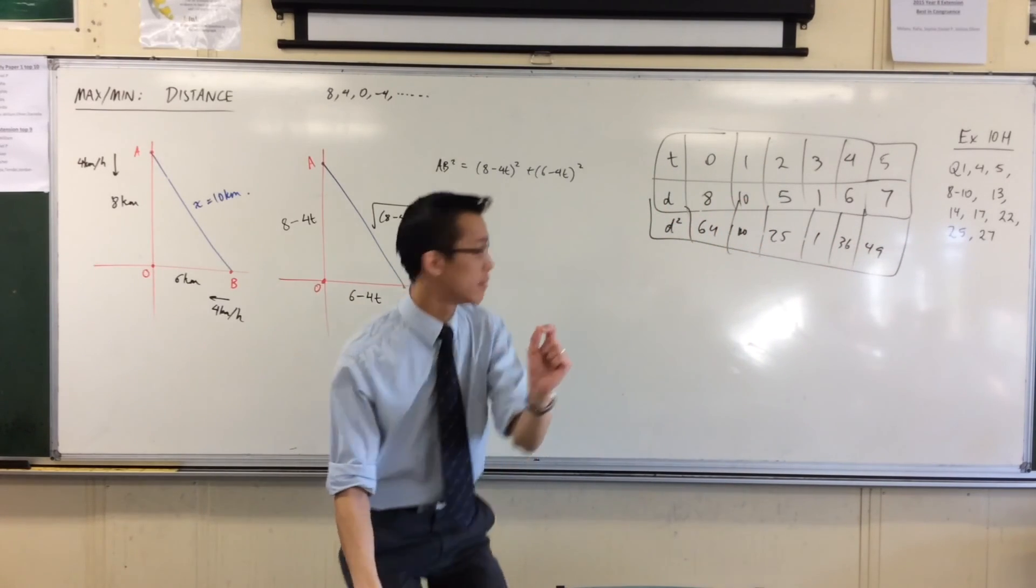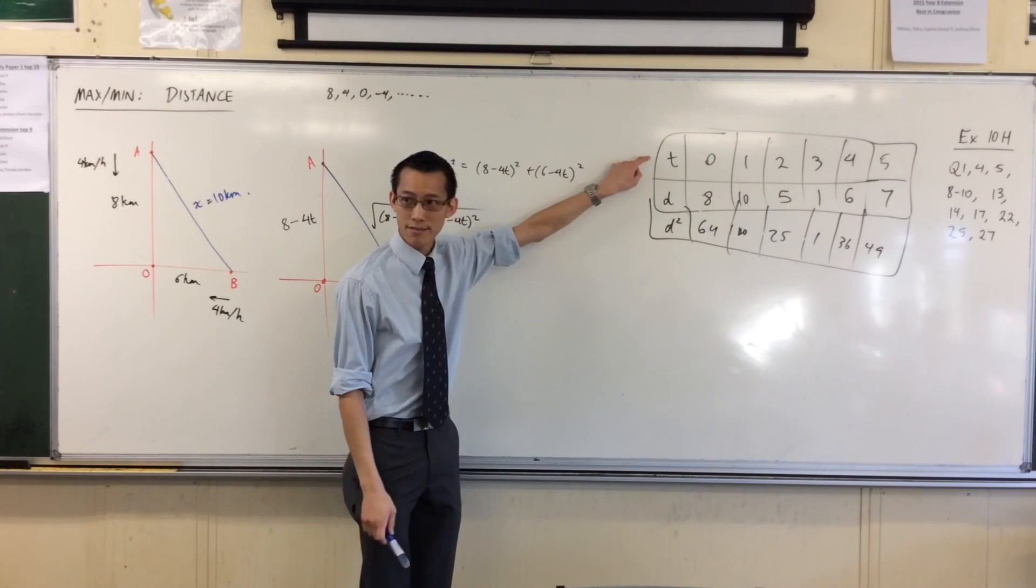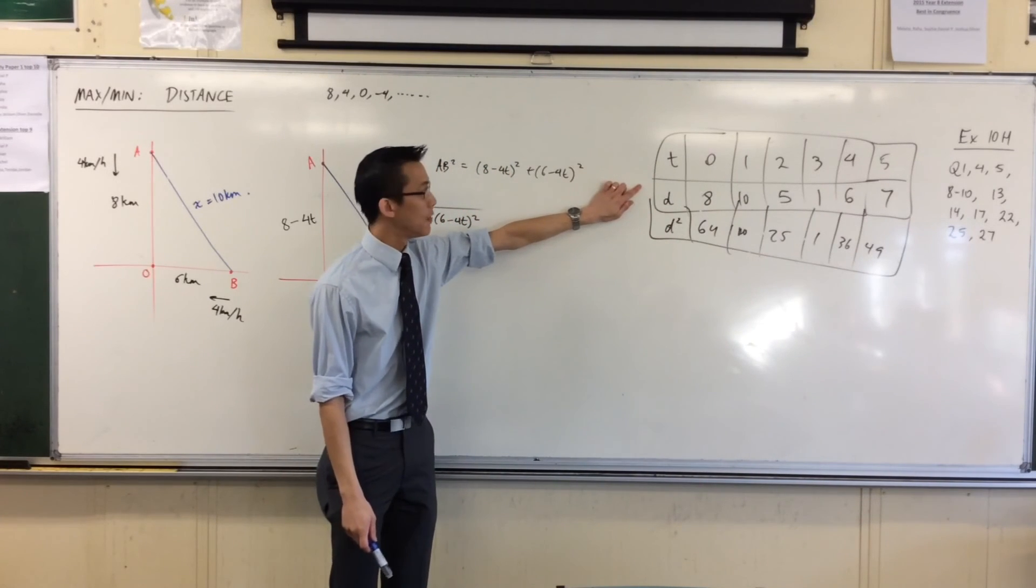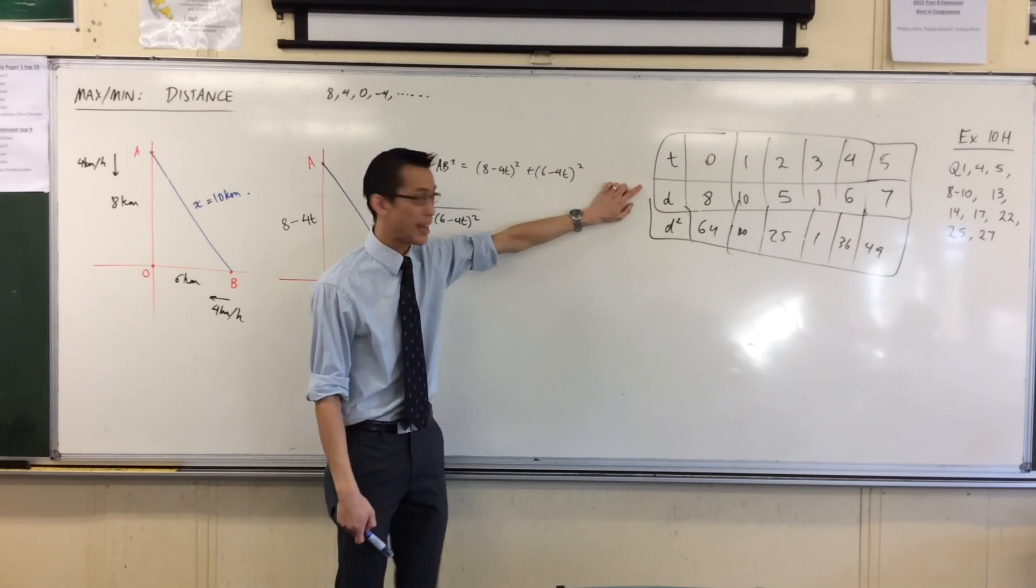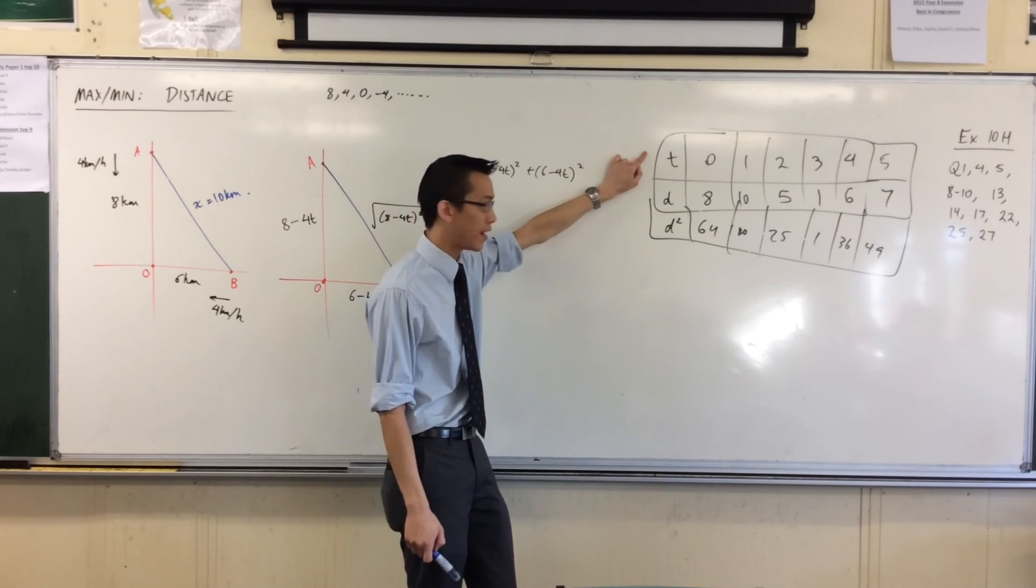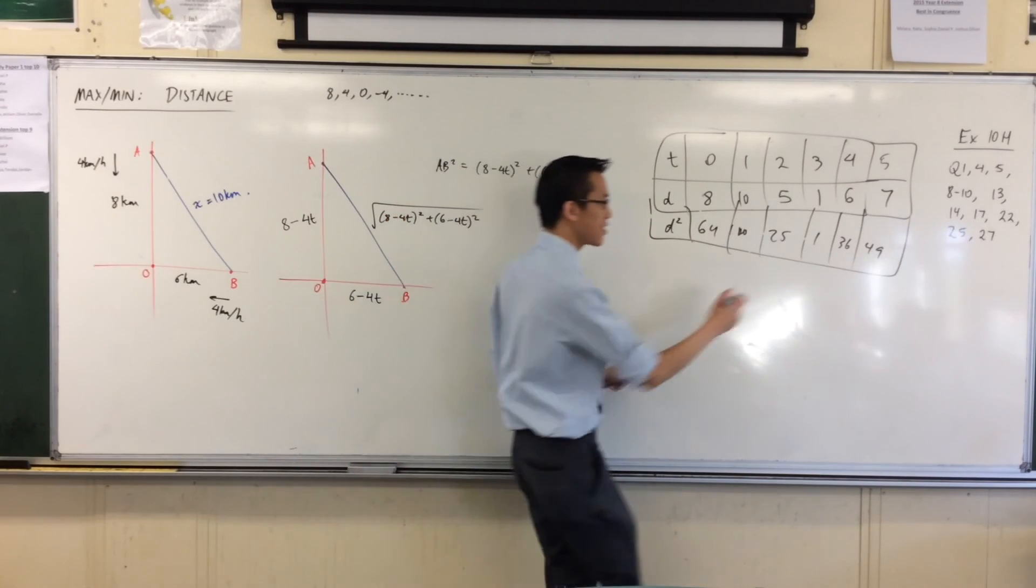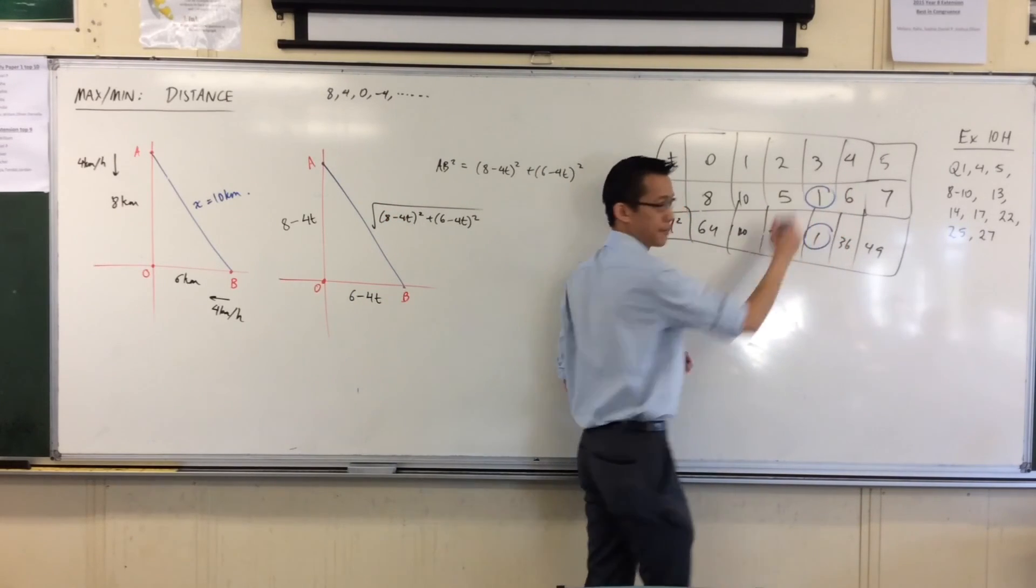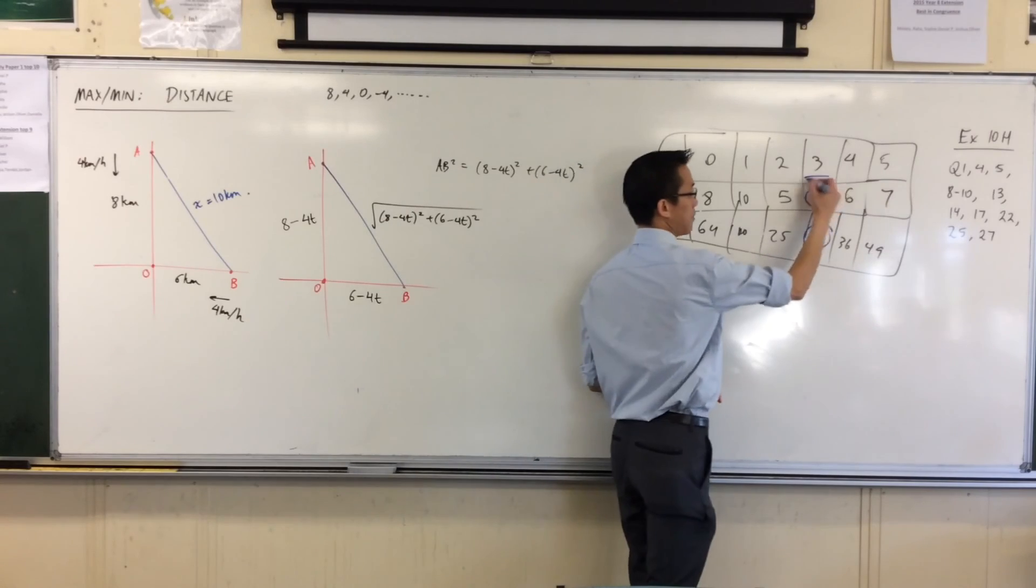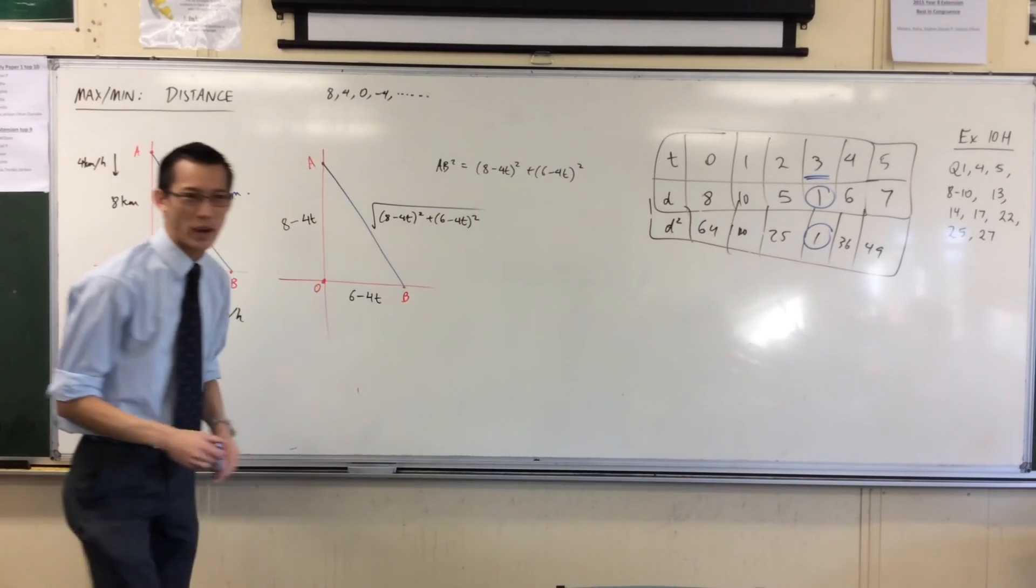These are easy numbers, so the distance squared will be 64, 100, 25, 36, and 49. Now if what I'm after is tell me when I have the shortest distance, answering that question is saying the same as telling me when the square of the distance is also a minimum. Do you see the minimum here corresponds to the minimum here, which will give you the same time either way? Now that's a bit weird—why do the distance squared?